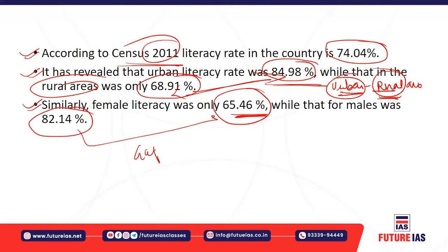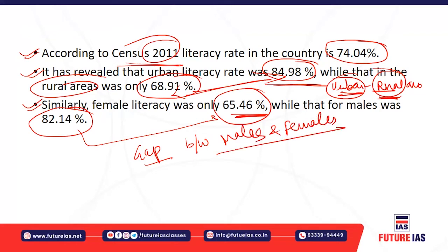There is a notable gap in literacy rates between males and females in India. The female literacy rate is 64.46 percent, while the male literacy rate is 82.14 percent, showing the variation in literacy between males and females in our country.